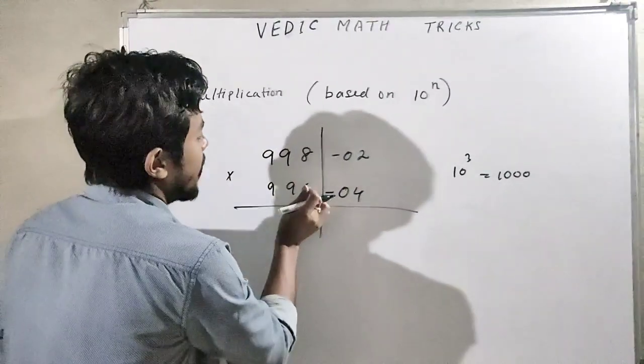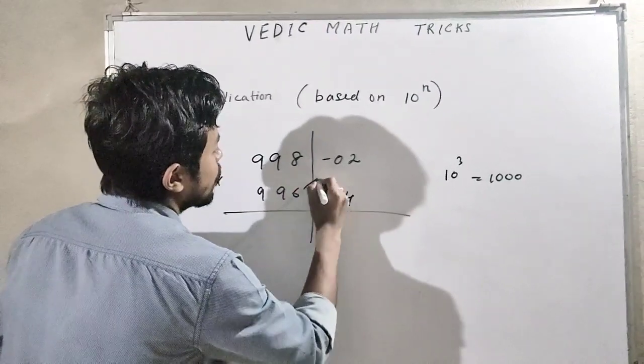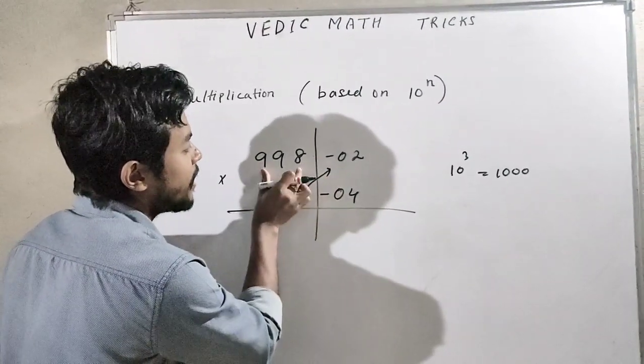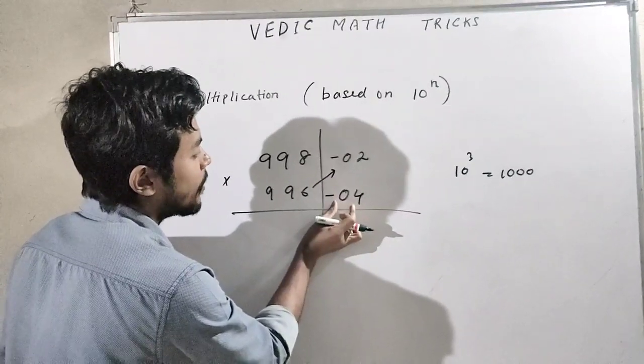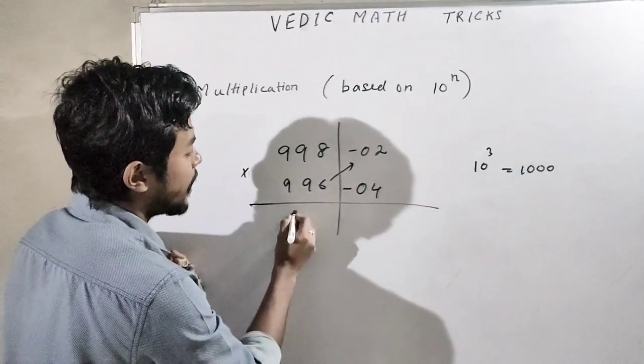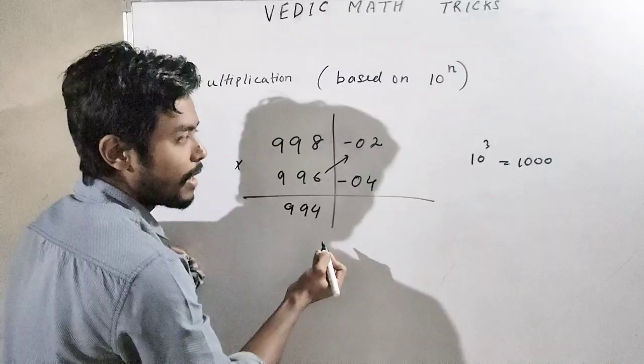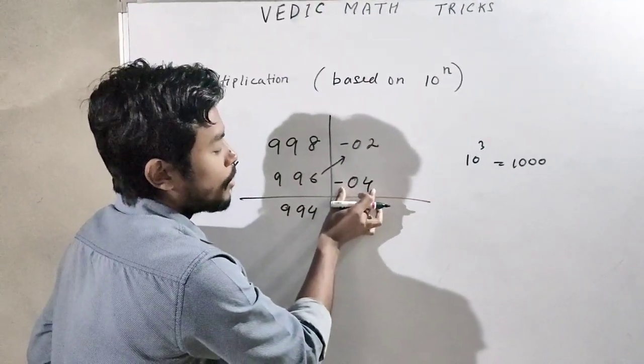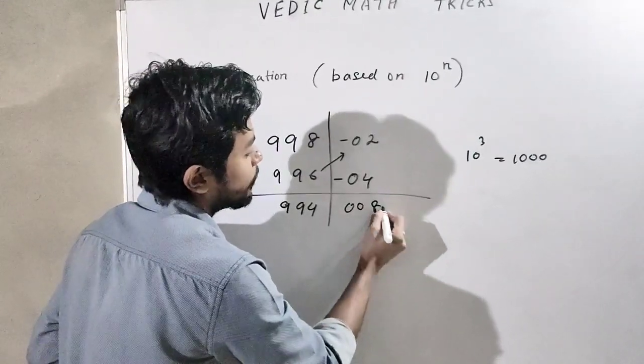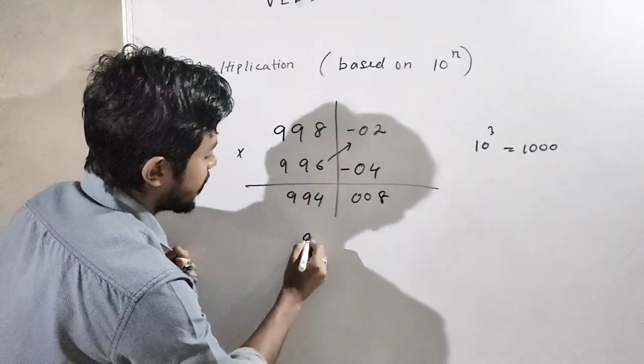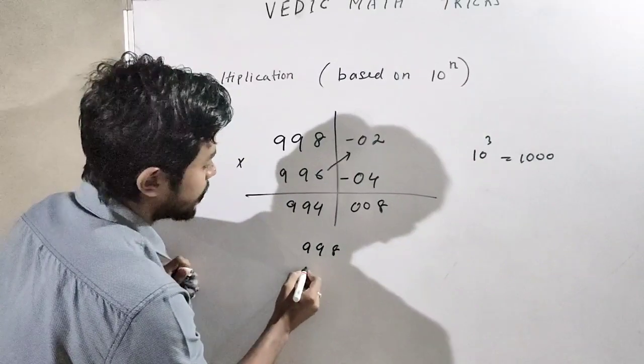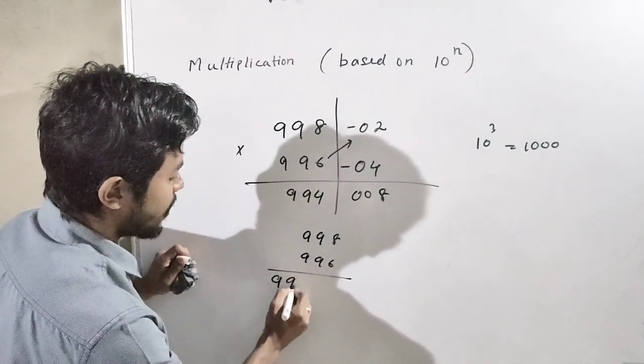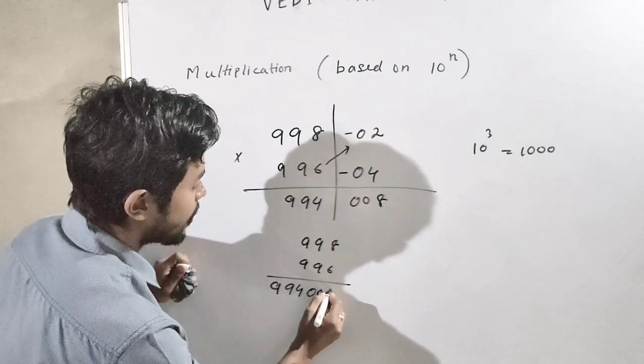Now 996 minus 2, how much do we get? 994. Or 998 minus 04, what will we get? 994. Now 02 into 04, that is double 0, 8. Therefore 998 into 996 can result as 994008.